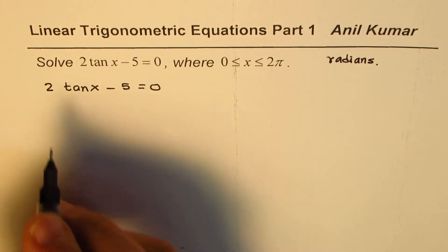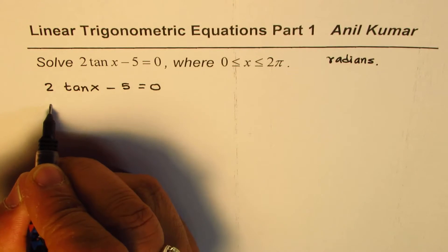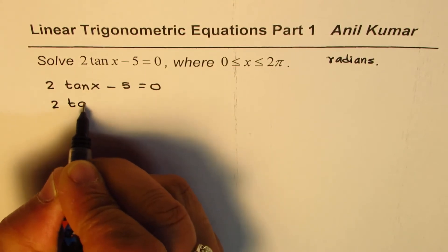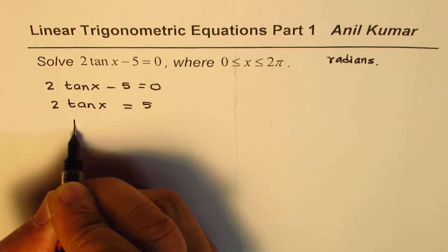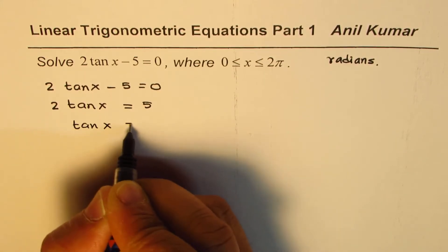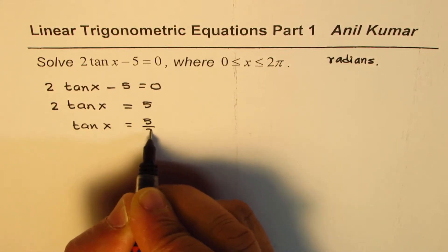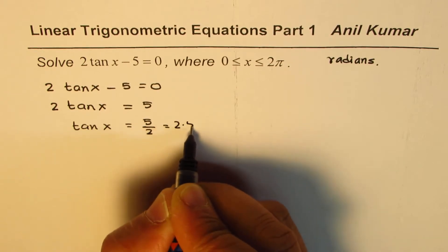That means isolate tan x. So we can take 5 to the other side, so we get 2 tan x equal to 5. Divide by 2 gives us tan x equals 5 by 2, or you can say 2.5.